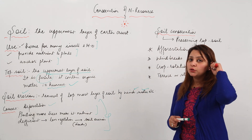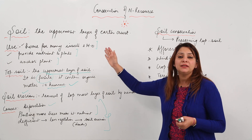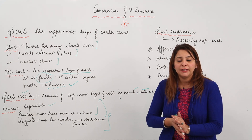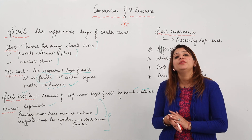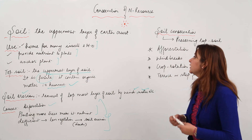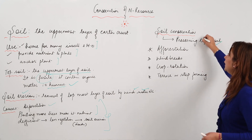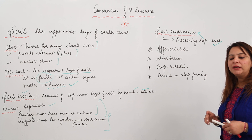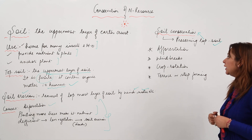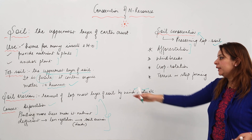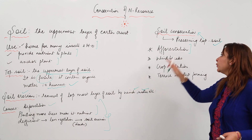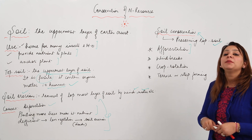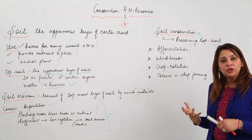Soil is very important — it is a habitat for microorganisms and other organisms, and we need food. So we need to conserve soil. The practice of conserving the topsoil is called soil conservation. One way to do it is afforestation — since deforestation leads to soil erosion, afforestation can control it.